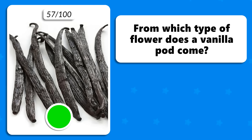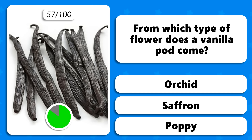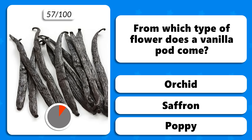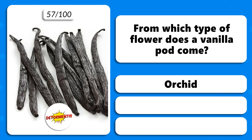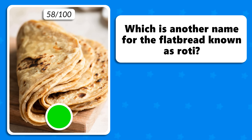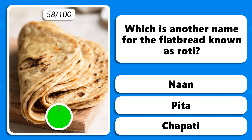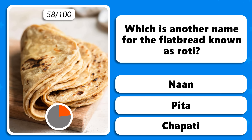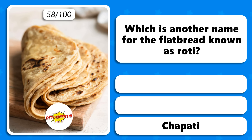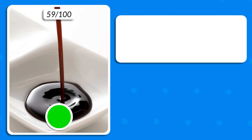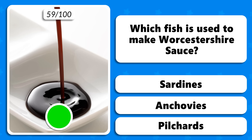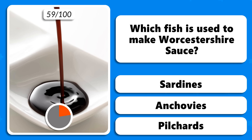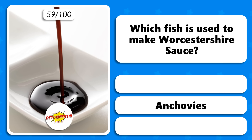From which type of flower does a vanilla pod come — orchid, saffron or poppy? The correct answer is orchid. Which is another name for the flatbread known as roti — naan, pita or chapati? Which fish is used to make Worcestershire sauce — sardines, anchovies or pilchards? Anchovies.